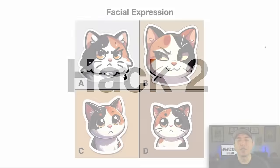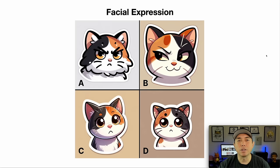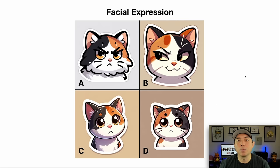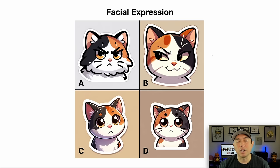Hack number two is using facial expressions. I shared these sticker examples on social media — this one's grumpy, this one's sneaky, this one's worried, this one's anxious. All of them have different facial expressions and that really helps sell the sticker. When I put this on social media most people gravitated towards the sneaky and cute ones because of their facial expression.